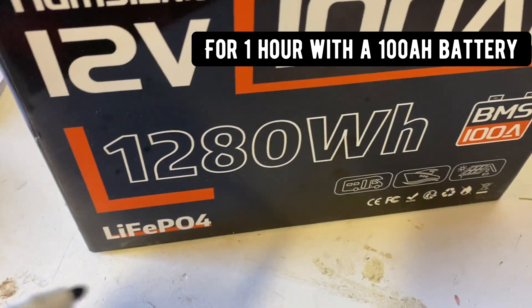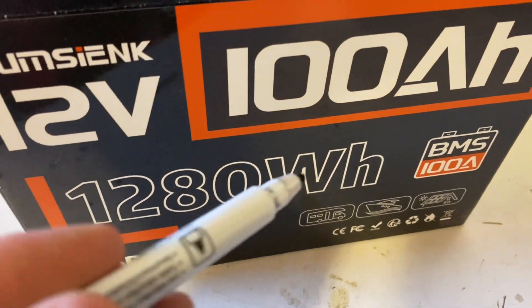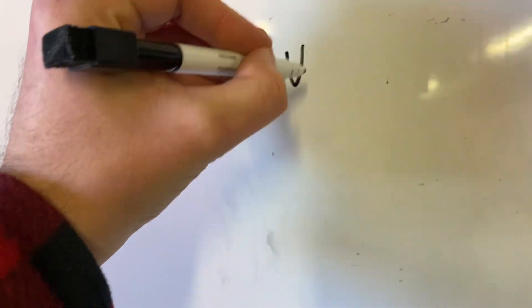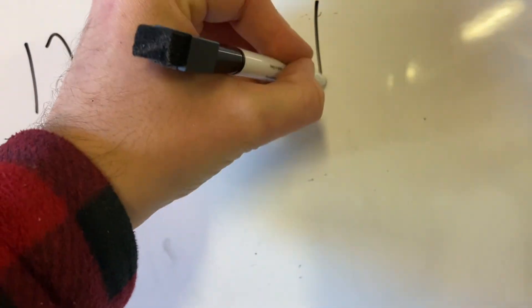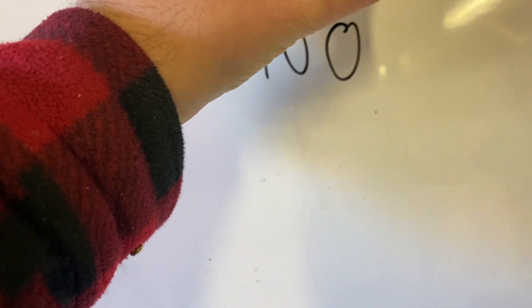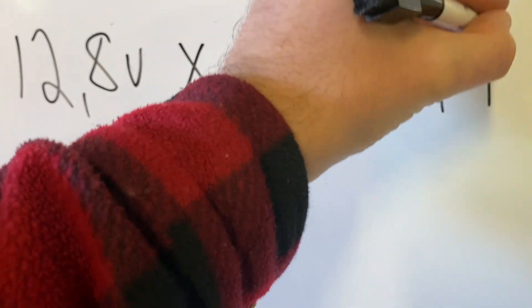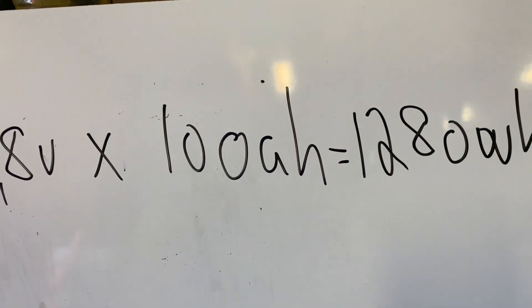You see this number says 1280 watt hours. You got 12.8 volts times 100 amp hours—1280 watt hours.